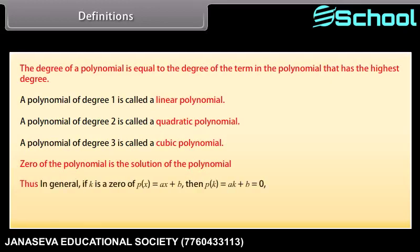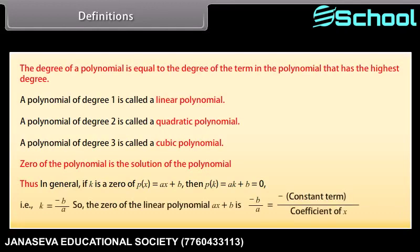Thus, in general, if k is a zero of p(x) which is equal to ax plus b, then p(k) is equal to ak plus b which equals 0. That is, k is equal to minus b upon a. So the zero of the linear polynomial ax plus b is minus b upon a, which equals minus constant term upon coefficient of x.